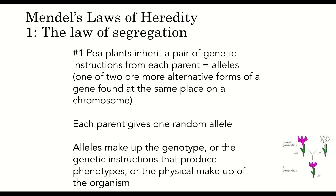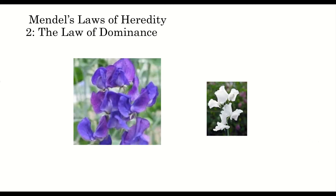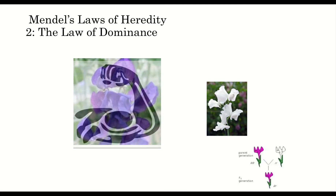Alleles make up the genotype, or the genetic instructions that produce phenotypes, or the physical makeup of the organism. Mendel's second important conclusion was the idea that some genes are dominant and others are recessive. Dominant traits mask recessive ones — they are not necessarily more abundant, but more powerful in determining an organism's phenotype. Here is a diagram of a plant breeding experiment showing that purple flowers are a dominant trait and white flowers result from a recessive trait. When crossed, these parent plants will produce entirely purple offspring. Later in this lecture, we will create a Punnett square of our own to clarify this further.